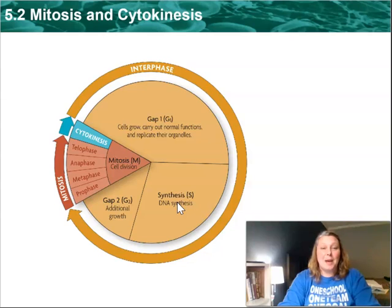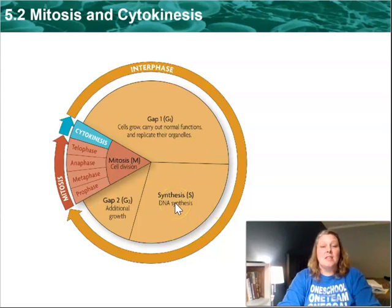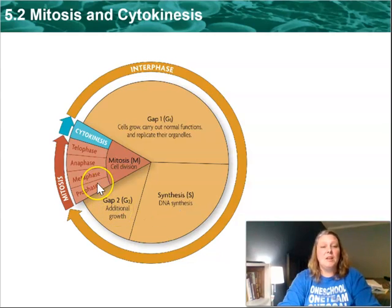Here we have a recap of the cell life cycle. You have Gap 1, when a cell is carrying out its normal functions. Synthesis, the copying of the DNA so that each new cell can have a correct copy of the DNA to function. Gap 2, which is additional growth and functioning. And then finally, what we're going to focus on today: mitosis and cytokinesis.